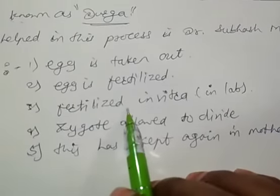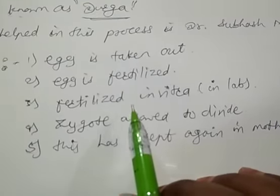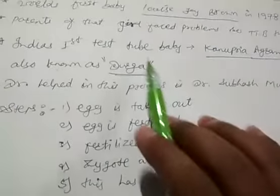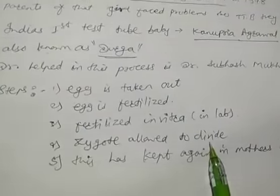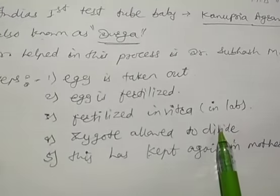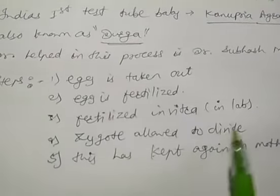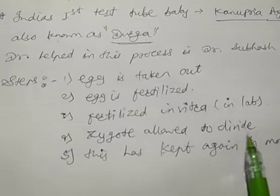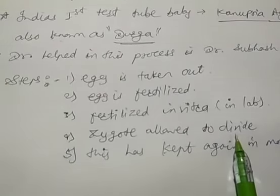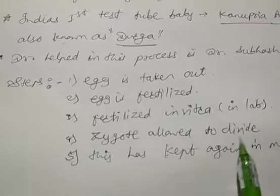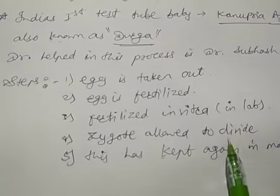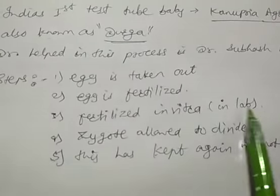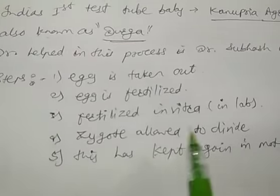Because this particular stage is done in the laboratory, people call the baby a 'test tube baby' — because in a laboratory, a test tube is a common instrument. When this procedure was first introduced, most people understood it as something new being created in a test tube. That is why the baby came to be called a test tube baby, or in vitro baby.